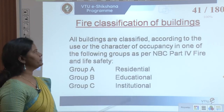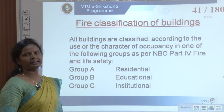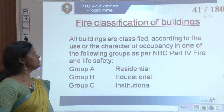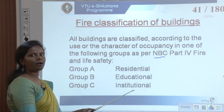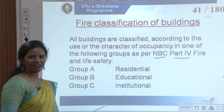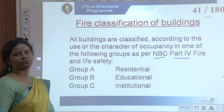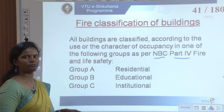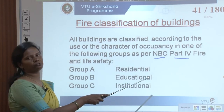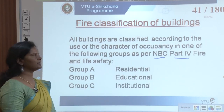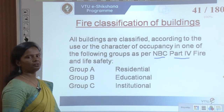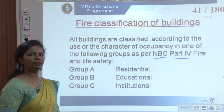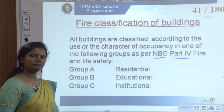Buildings are classified based on how to handle fire, as per the National Building Code Part 4 — NBC Part 4 — which covers fire and life safety requirements. This document is available online and can be downloaded. It covers classifications and strategies for fire safety codes.